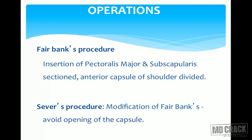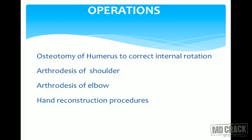Common operations include the Fairbanks procedure, where there is insertion of the pectoralis major muscle and sectioning of subscapularis; the anterior capsule of the shoulder is divided. The Sever procedure is a modification of Fairbanks — just avoiding opening of the capsule. Other operations include osteotomy of the humerus to correct internal rotation deformity, arthrodesis of the shoulder and elbow, and hand procedures for reconstruction.